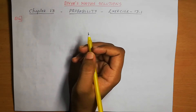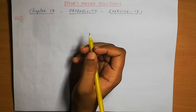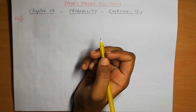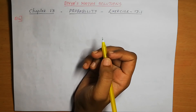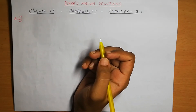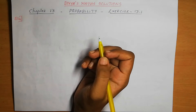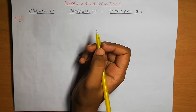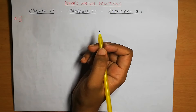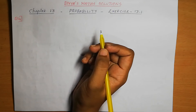Dear students, welcome to Divya's MagSolutions. Today we are going to discuss Chapter 13 Probability, Exercise 13.1, Question number 14. Given that the two numbers appearing on throwing the two dice are different, find the probability of the event: the sum of the numbers on the dice is 4.